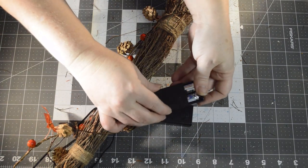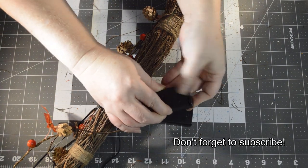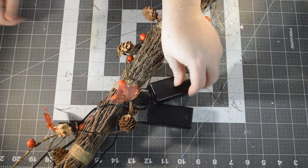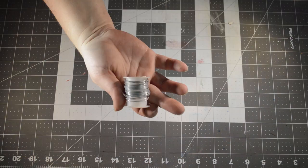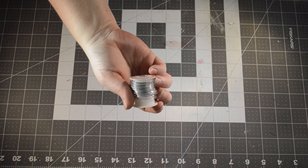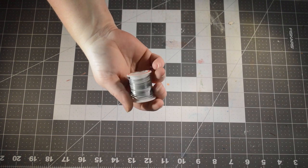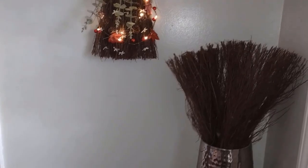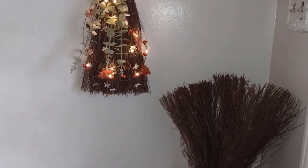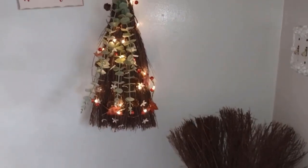For the next step, now that this part is finished, we can go ahead and use some wire to wire these boxes onto the handle of the broom. I'm just going to use some floral wire for that and we are finished.